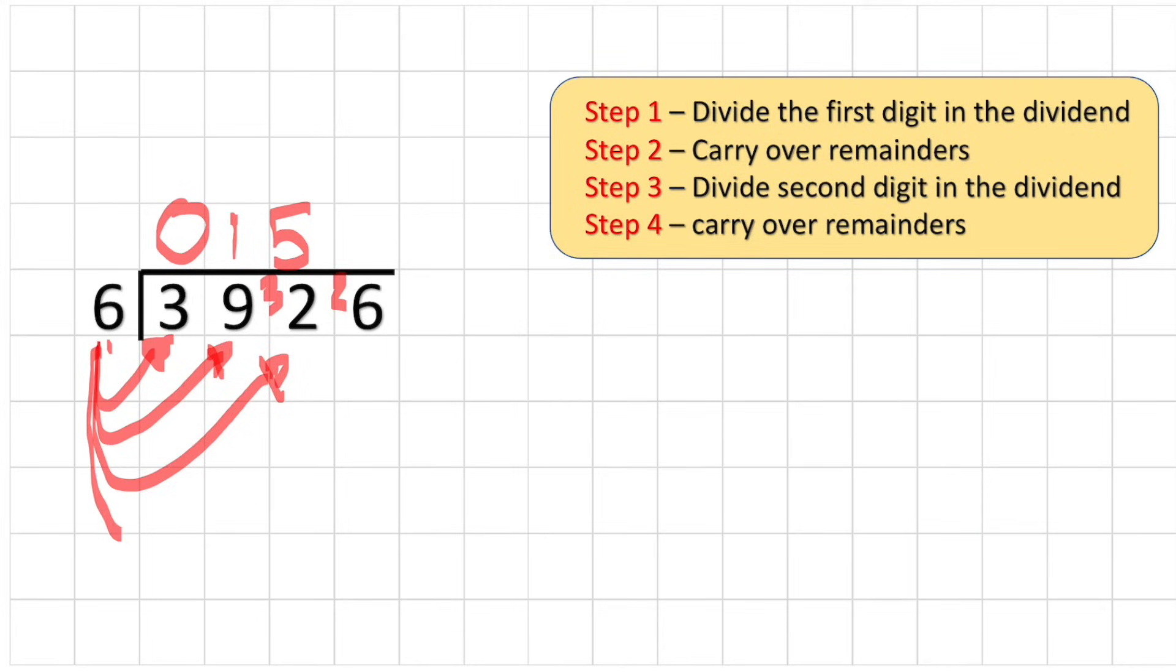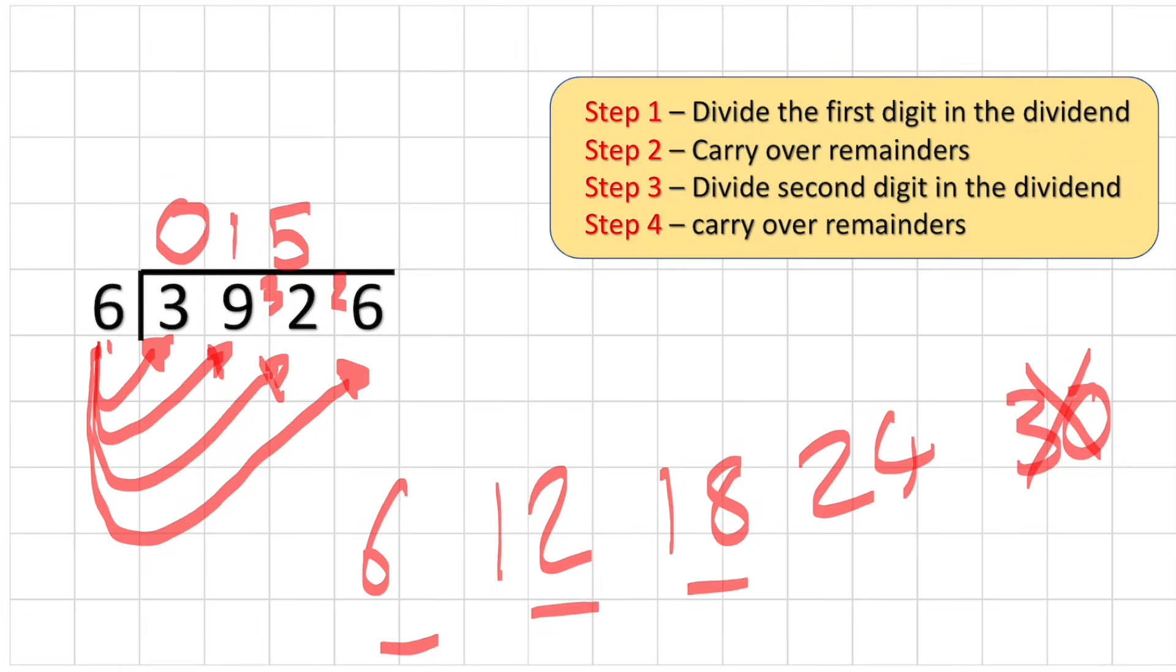And my last question says how many sixes in 26? So here we go again. 6, 12, 18, 24. Can't get to 30, so it would be 1, 2, 3, 4. But I have some left over because I needed to get to 26. What's the difference between 24 and 26?